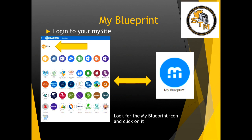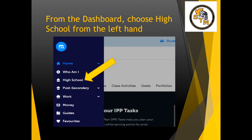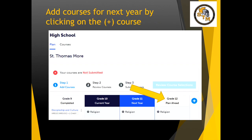You will be using My Blueprint to select your courses. You might remember this from last year — you will go to your My Site, look for the My Blueprint icon and click on it. Once you've done that, you'll go to the Dashboard and choose High School from the left-hand side. Once you've chosen High School, that will bring you to the Planning page. This is where you will add courses for next year by clicking on the Add symbol.